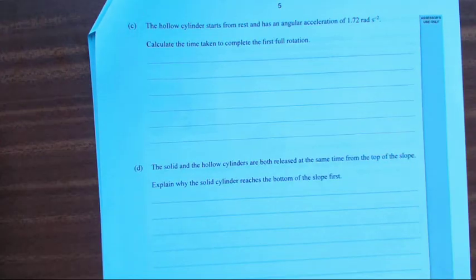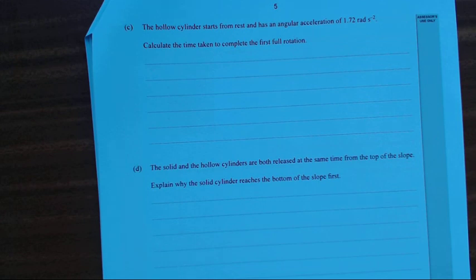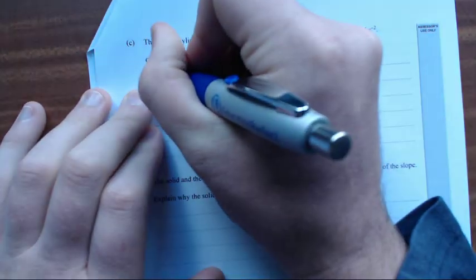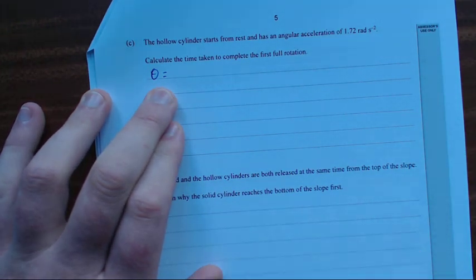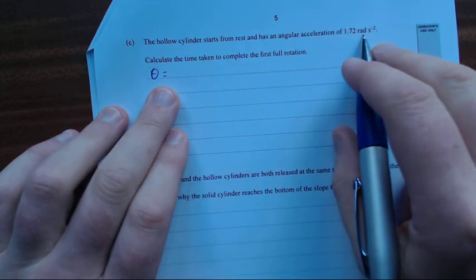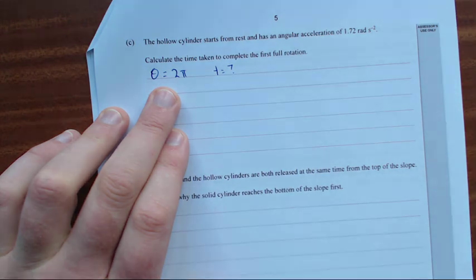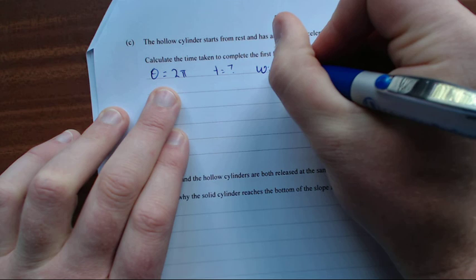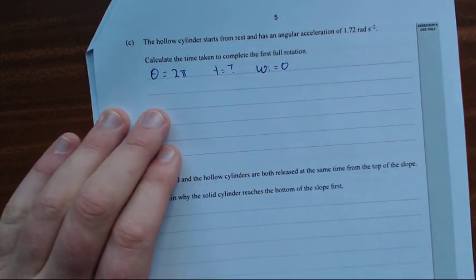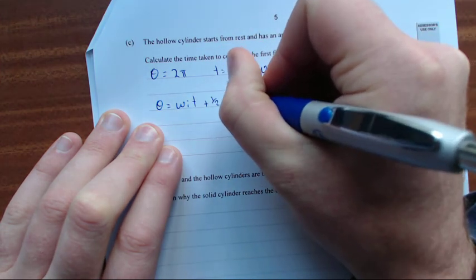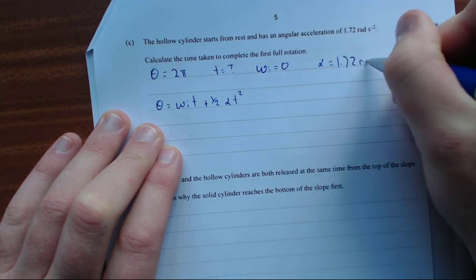Next question. The hollow cylinder starts from rest and has an angular acceleration of 1.72 radians per second squared. Calculate the time it takes to complete the first full rotation. The angular distance needed for one full rotation is theta equals 2π radians. It starts from rest, so the initial angular velocity equals zero. From the formula sheet: angular distance equals angular velocity times time plus half times angular acceleration times t squared.